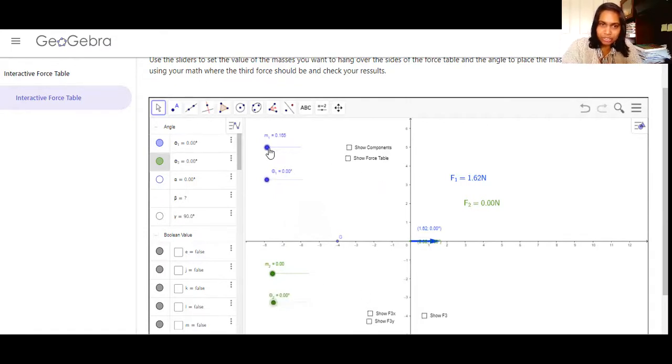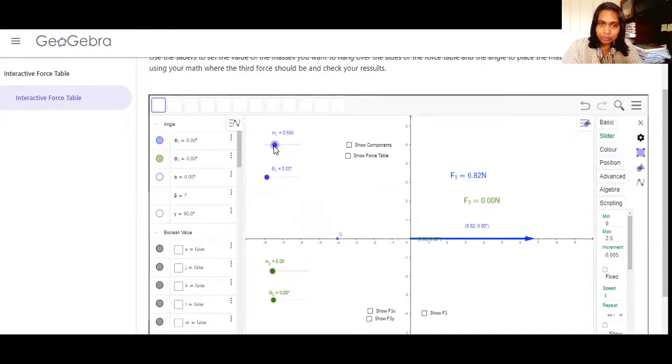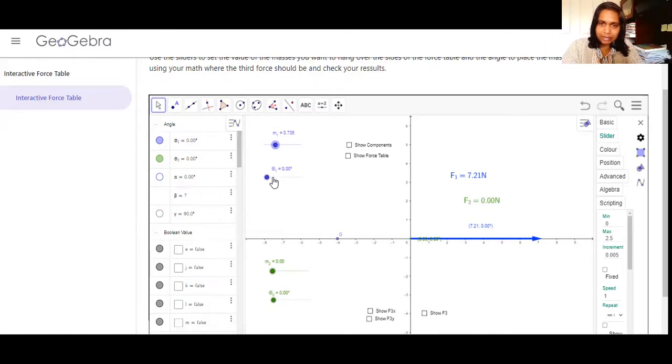Then when you want to change the mass, you just drag this one or you can click on this number. It's automatically adding up the masses. Move this cursor and bring it to some closer value and then click on the number until you reach the desired number.